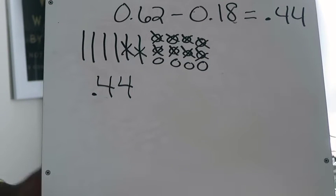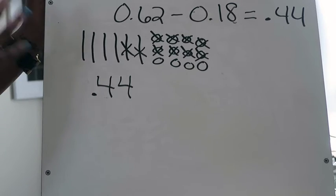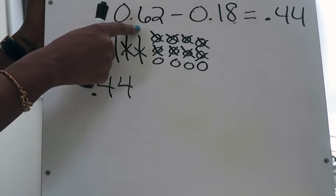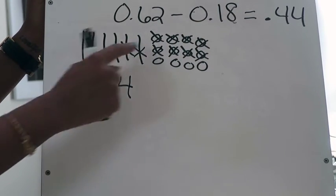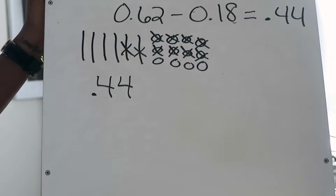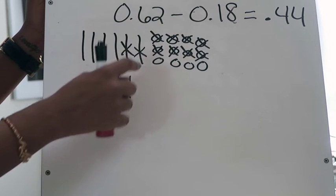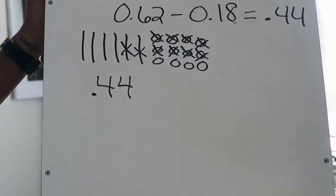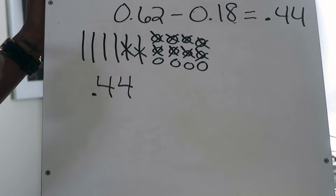That's really all that you need to do. It's not that complicated if you just take your time, go one step at a time, make sure your quick picture represents the number being subtracted from, and subtract one place value position at a time. If you don't have enough in a particular place value position, go to the next, regroup, and then subtract.